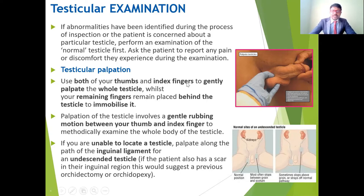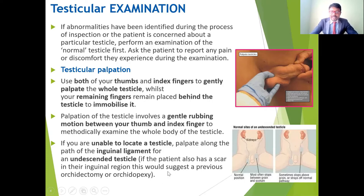Use both thumbs and index fingers to gently palpate the whole testicle to identify size or any abnormality, using a gentle rubbing motion. Sometimes the testicles cannot be located in the scrotal region — we may need to palpate along pathways in the inguinal ligament. In cases of undescended testicles, the testes cannot be found inside the scrotum.